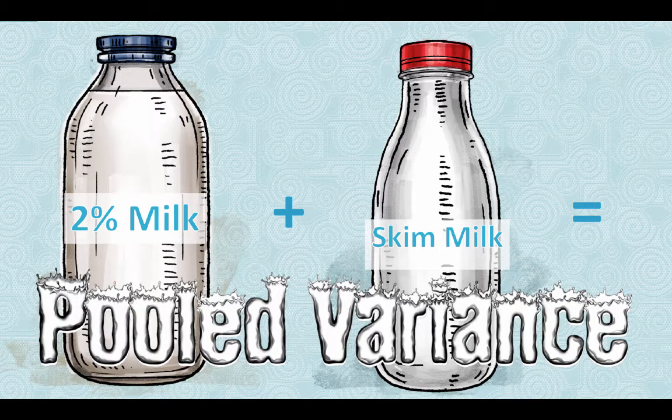If you were comparing two samples of exactly the same size, then you could just average their variability. But if one sample was larger than the other, then you would need to weight the variability of each sample by its sample size.